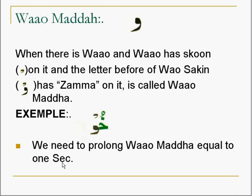Our second Madd letter is Waw Madd. When there is a Waw and the Waw has a sukoon on it, and the letter before the Waw sakin has a damma on it, it is called Waw Madd. Let's see an example — there is a Waw, and the Waw has a sukoon.